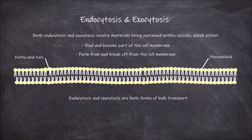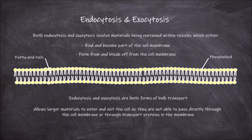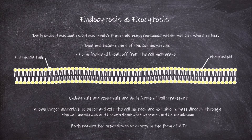Endocytosis and exocytosis are both forms of bulk transport, which is important as they allow larger materials to enter and exit the cell, as they are not able to pass directly through the cell membrane or through transport proteins in the membrane. The processes of endocytosis and exocytosis both require the expenditure of energy in the form of ATP.